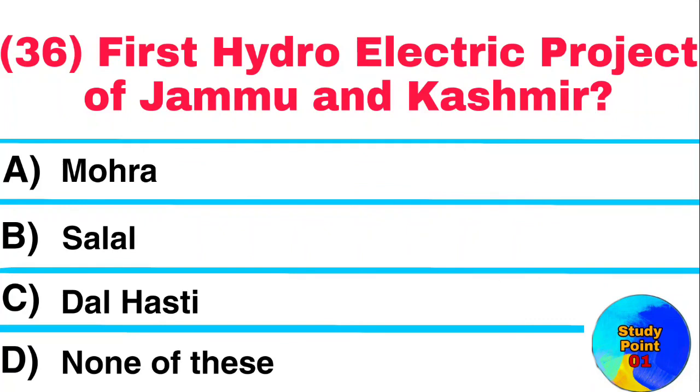Question: What was the first hydroelectric project of Jammu and Kashmir? Answer: Salal.